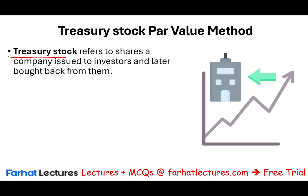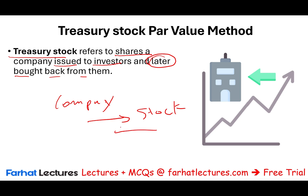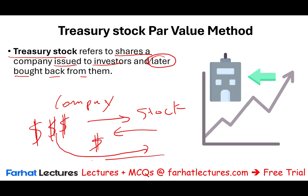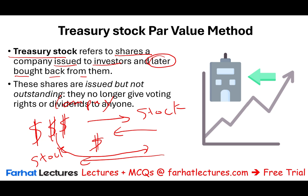Let's start by explaining treasury stock. What is treasury stock? It refers to shares a company issued to investors and later buys back from them. When the company first starts, it will issue stocks to investors and in return receive money from investors. At some point the company might have lots of money because of profit, and they will give back the money and buy back their own stock. These shares are issued but no longer outstanding, so we take them out of the outstanding shares. They no longer have voting rights and they no longer receive dividends.